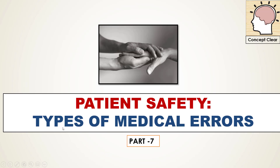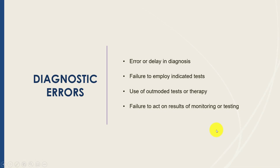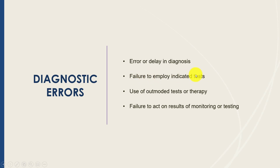Hi friends, today in this lecture I will be talking about the different types of medical errors. One type of medical error is a diagnostic error — these are errors or delays in the diagnosis. Either we made the wrong diagnosis, or we made the right diagnosis but not in a timely fashion, and this can result from a failure to use indicated tests in the diagnosis of a particular condition.